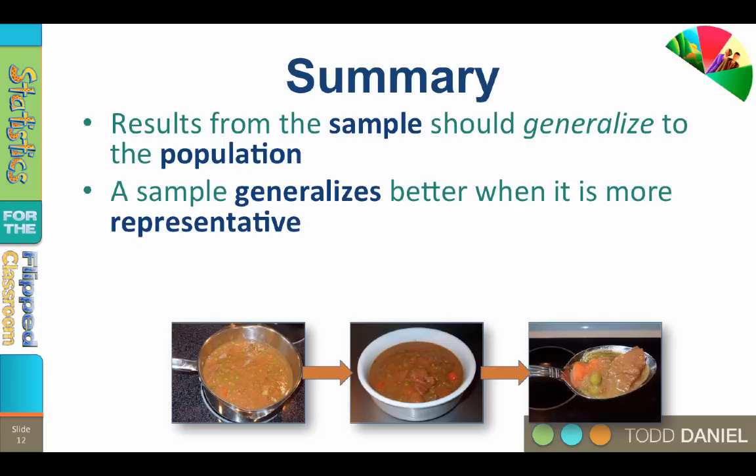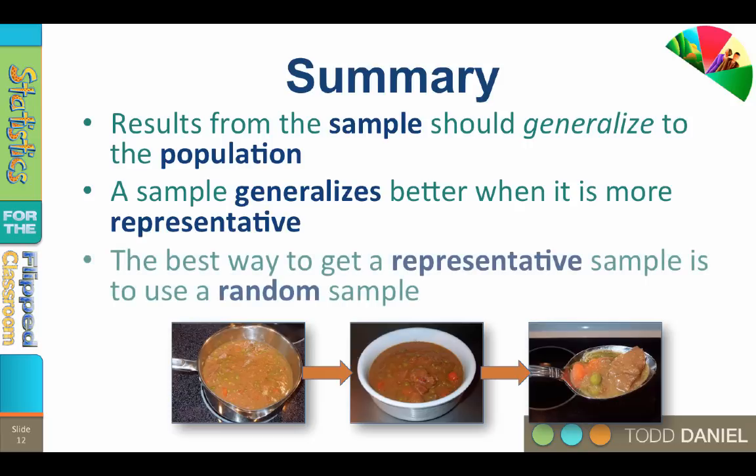What is the best way to get a representative sample? The best way is from a random sample — that means you stir the pot first, so that all of the elements in the stew have an equal probability of being selected. However, because a random sample can still be non-representative, we need inferential statistics to determine how well our sample represents our population.